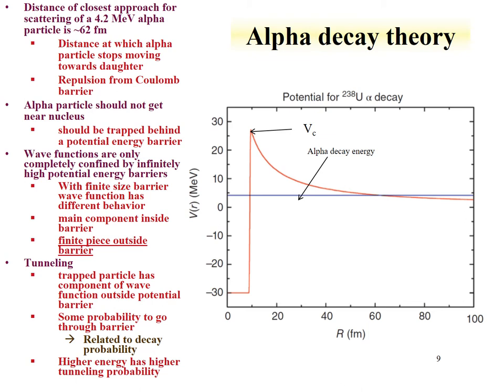Wave functions are only completely confined by an infinitely high energy barrier. We have a Coulomb potential, so it's finite. The main component of a wave function describing where the alpha particle can exist would be inside the barrier, but there's also a finite component outside the barrier. So there's a probability of finding the alpha particle outside the barrier. This is what we call in quantum mechanics tunneling.